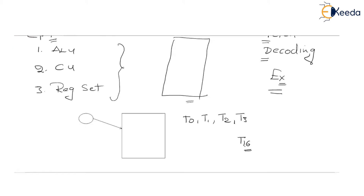In the hardwired control unit design, we have designed a clock which has a counter in which the maximum number of clock pulses that can be generated is T16 — that is, 16 clock pulses can be released by the clock. After 16 clock pulses, the clock will be reset back to T0.